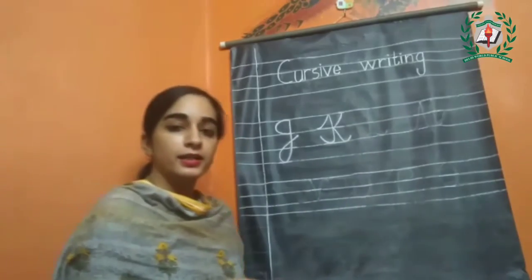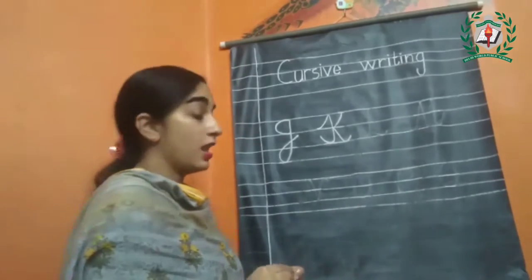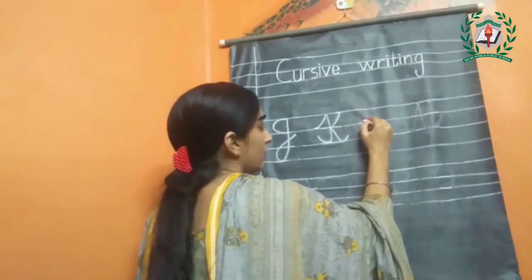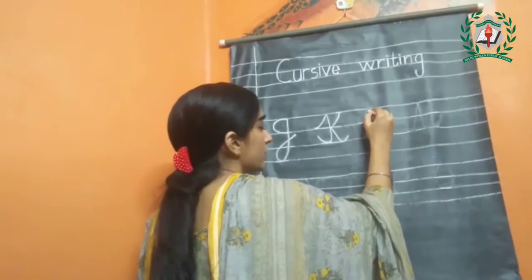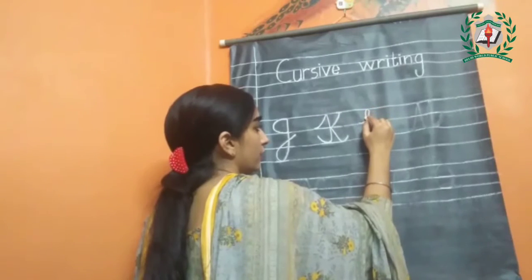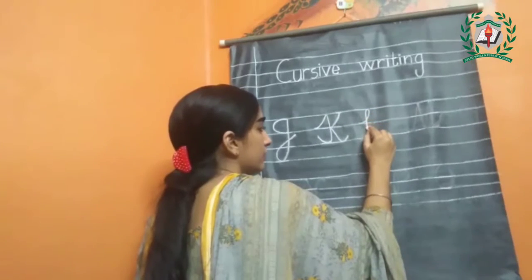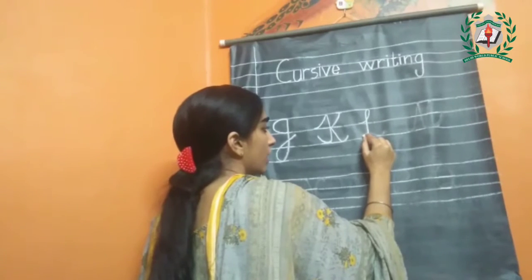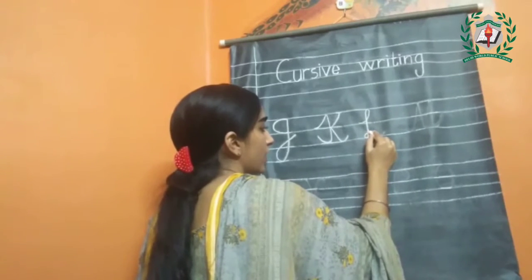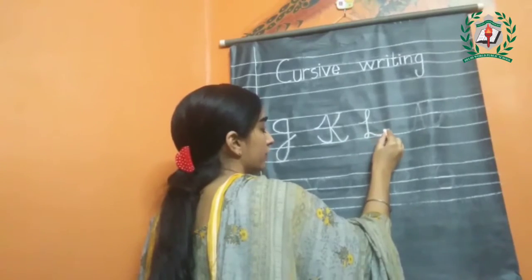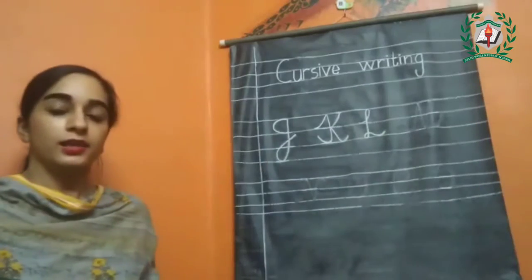Now the next letter is L. Start from the head line, make a loop touching to the upper line. Then followed by the standing line with a loop at end touching to the baseline. Make a slight curve. This is the letter L.